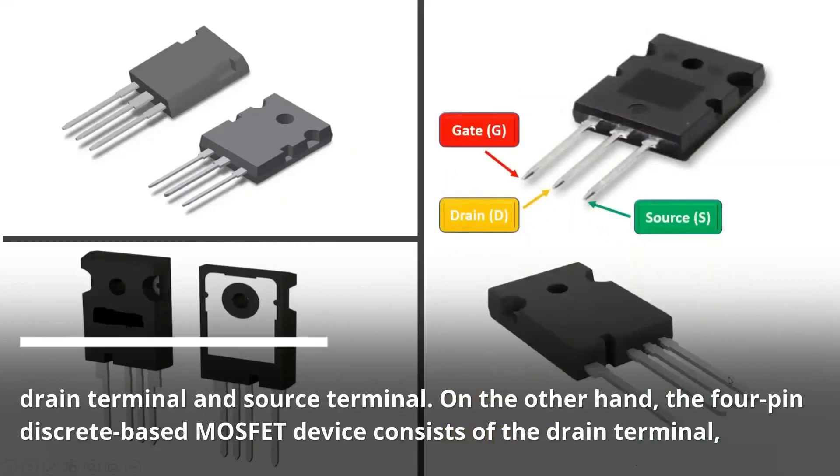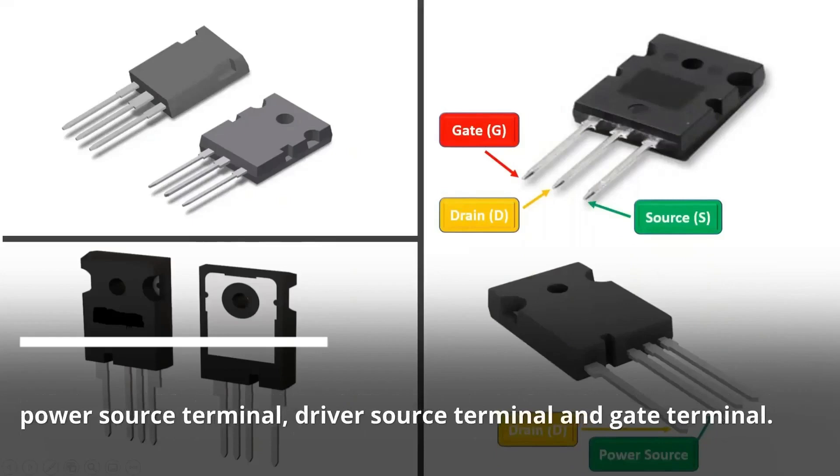On the other hand, the four-pin discrete-based MOSFET device consists of the drain terminal, power source terminal, driver source terminal, and gate terminal.